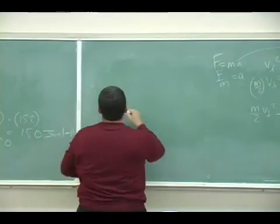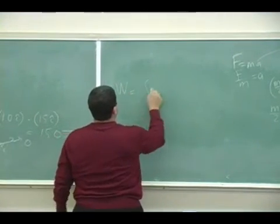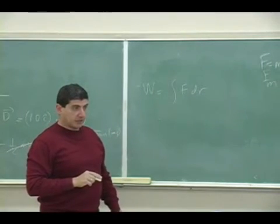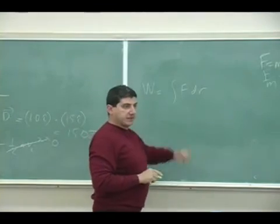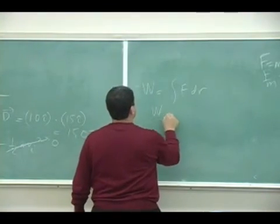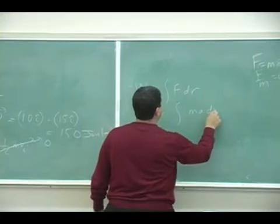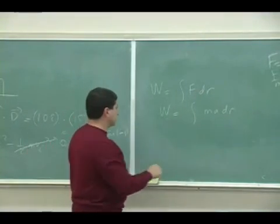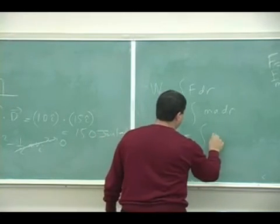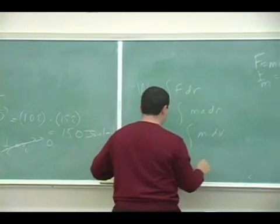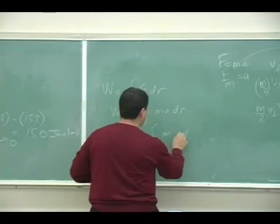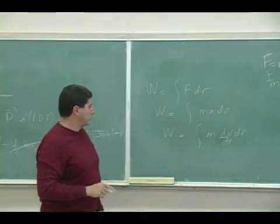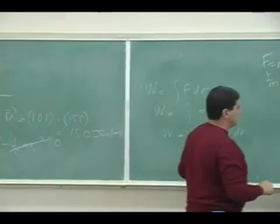I would start with the definition of work, F dr, and then I would write F as ma, and then ma will be dv dt.